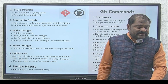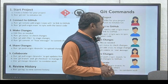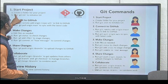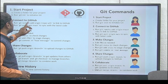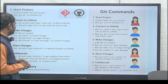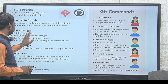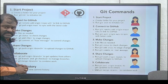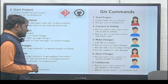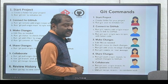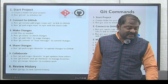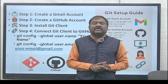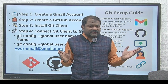The workflow is: first create a project folder, then connect to GitHub, make the changes, share the changes, collaborate with others, and review the history. These are the main steps to follow when working with GitHub and Git.